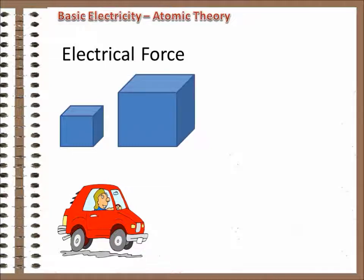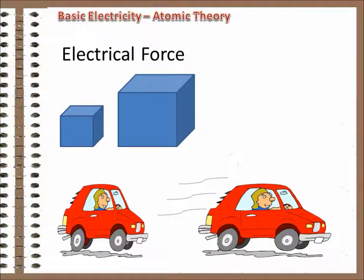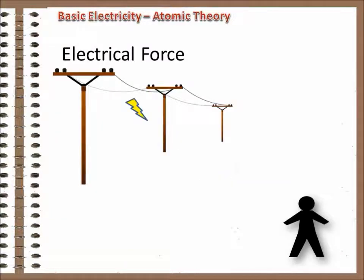A cube of iron two inches on a side is not twice as heavy as a cube one inch on a side. It's eight times as heavy. A car going 60 miles an hour doesn't have twice the energy of one going 30. It has four times the energy.